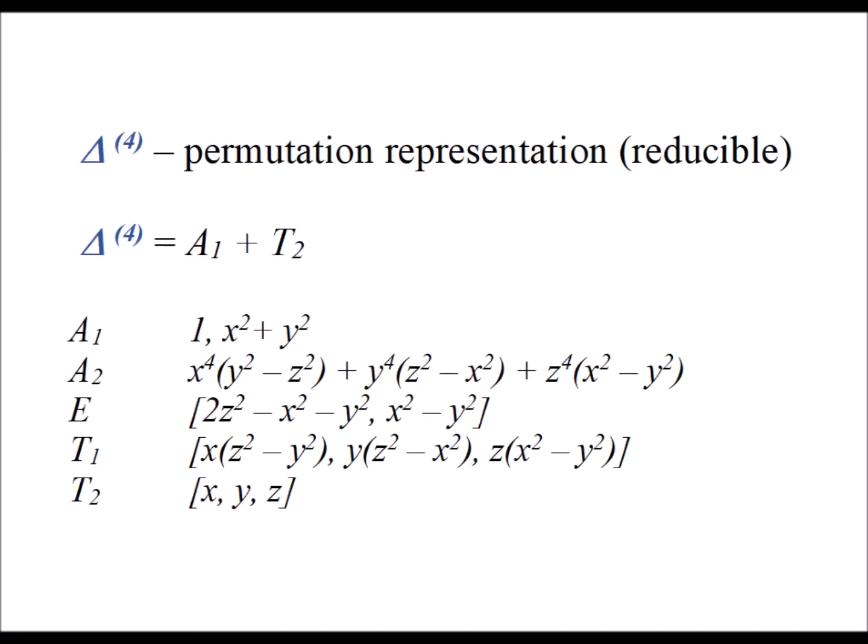In this slide, we summarize that we can decompose delta 4 into A1 plus T2. Notice that A1 is non-degenerate, so it counts as one dimension. T2 is triply degenerate, so it counts for three dimensions. We have actually decomposed it into a four-dimensional space as we predicted. We also summarize here the basis functions for each of the five different possible irreducible representations in the tetrahedral group Td.